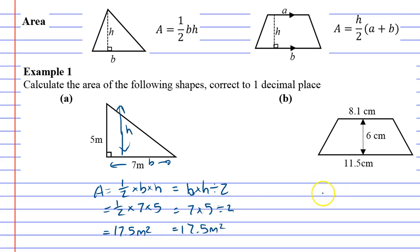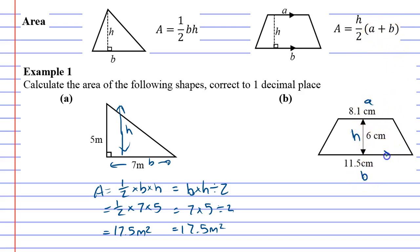Looking at question B now — this is the area of a trapezium. This one quite often throws people a little bit. H is the height, just like on your triangle — it's the height going directly up and down. Then we've got little a and little b, which represent the two sides that are parallel to each other. See how these two lines are parallel? They become a and b.